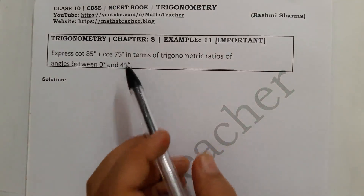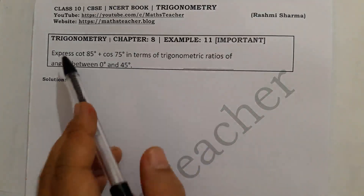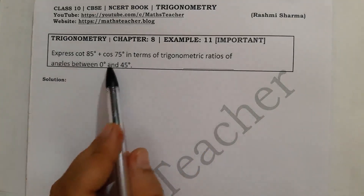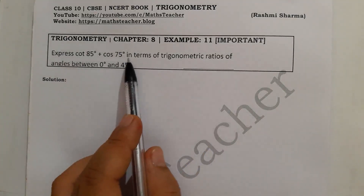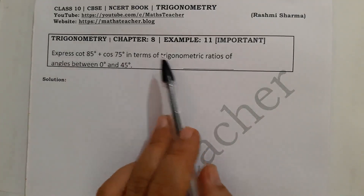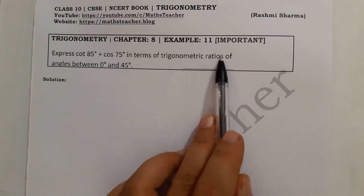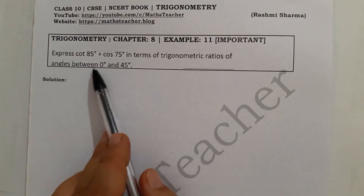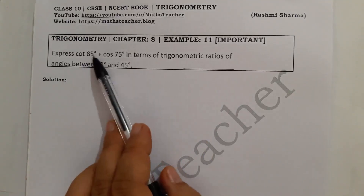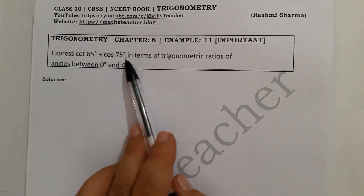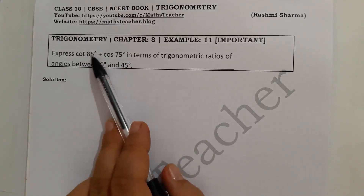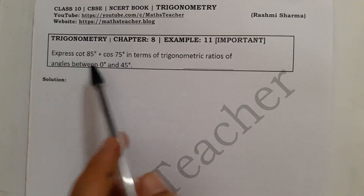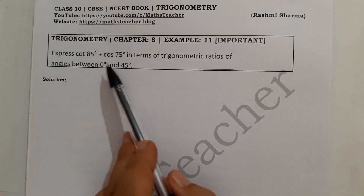The question is: express cot 85° plus cot 75° in terms of trigonometric ratios of angles between 0° and 45°. The given angles are 85° and 75°, and we need to change these angles to be between 0° and 45°.